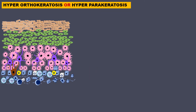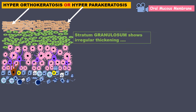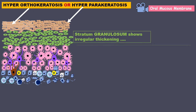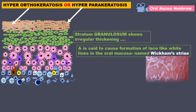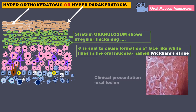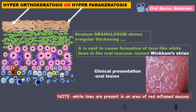Hyperkeratinization is in the form of hyperorthokeratosis or hyperparakeratosis. The stratum granulosum shows irregular thickening and is said to cause formation of lace-like white lines in the oral mucous membrane called Wickham striae. This is a clinical presentation of the oral lesion — note that the white lines are present in an area of red inflamed mucosa. Lichen planus is actually called lichen ruber planus, where ruber refers to the red inflamed mucosa.